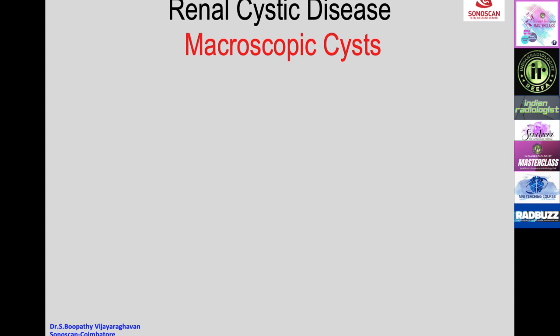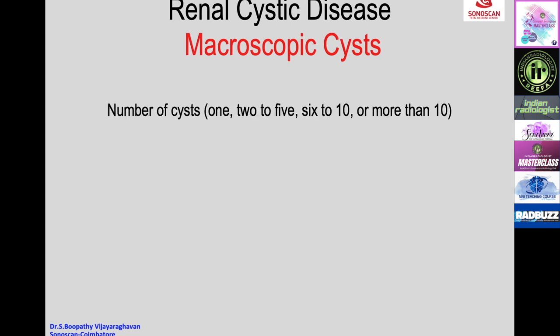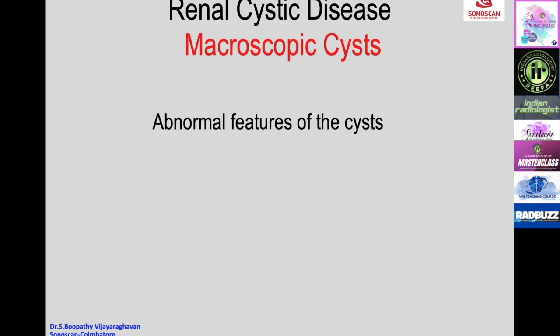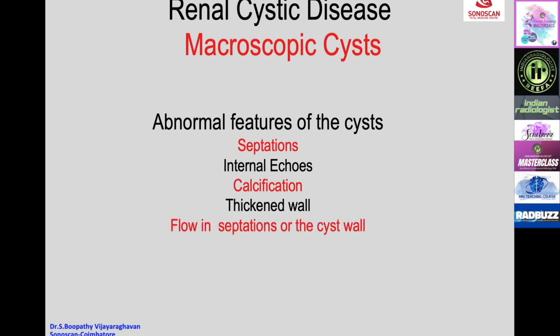When macroscopic cysts are present on ultrasound, the number should be described—whether 1, 2–5, 6–10, or more than 10—along with laterality (unilateral or bilateral), location (cortical, medullary, or corticomedullary junction), and the maximum diameter of the largest cyst. Abnormal features of the cysts to look for include septations, internal echoes, calcification, thickened walls, and color Doppler flow in the septations or cyst wall.